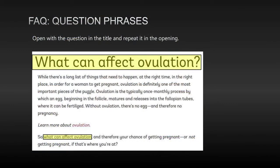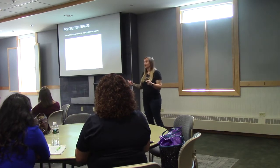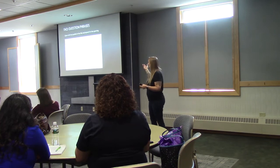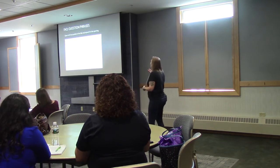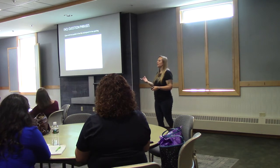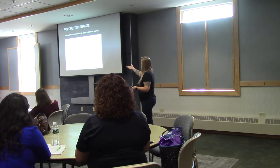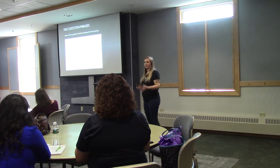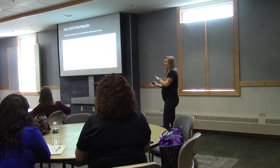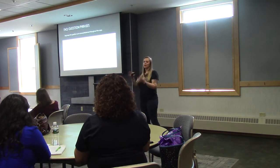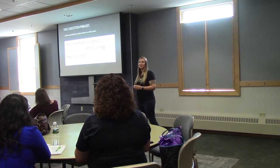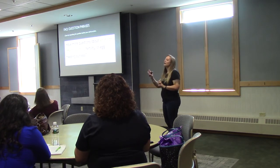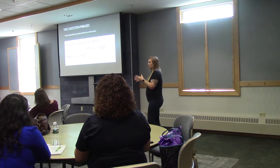One frequently asked question is about question-phrase keywords. If your primary keyword is a question — like 'what can affect ovulation' — it's easy to put in the title but really tricky to repeat throughout the article without sounding unnatural. What you can do — and Google will understand this — is rephrase the question as an answer. Use it as a question in the title and opening, then rewrite it as an answer in the body: 'This can affect ovulation.' In your conclusion you can sneak it back in as a question one more time.